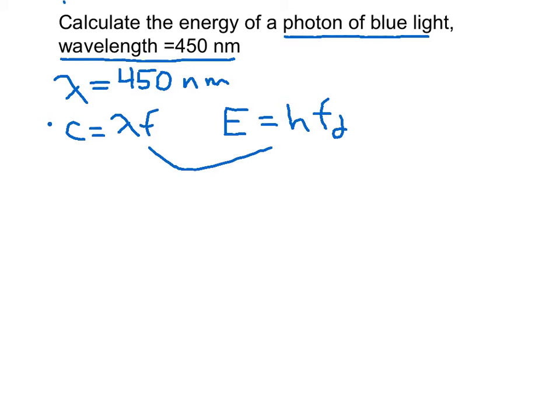And so we're given this wavelength here, so what we're going to do is combine these two equations. And when we rearrange this equation here to solve for F, it looks like this: E is equal to H C over lambda.